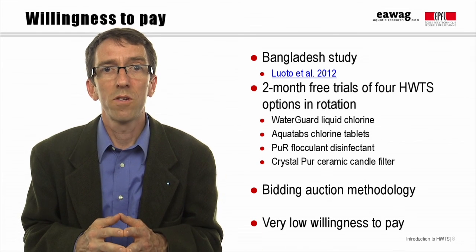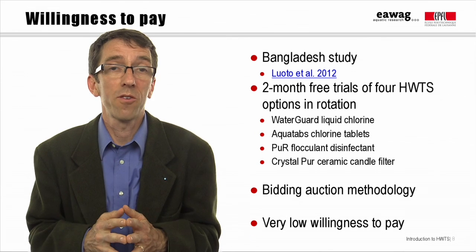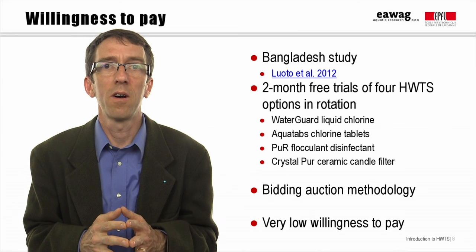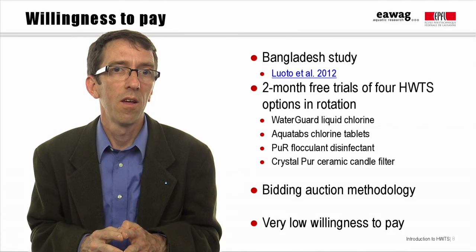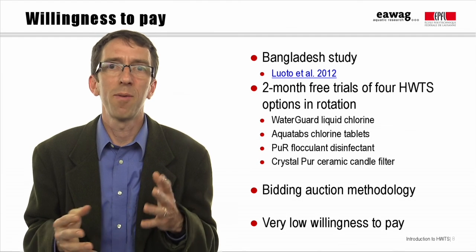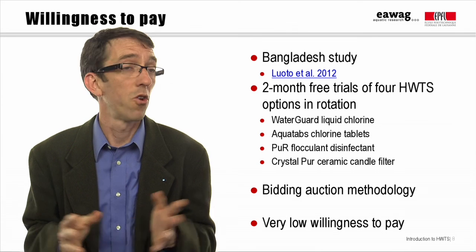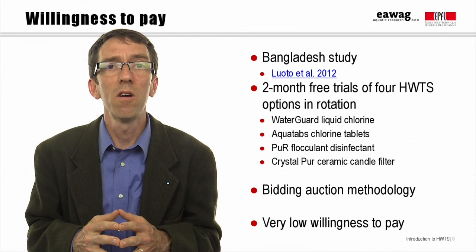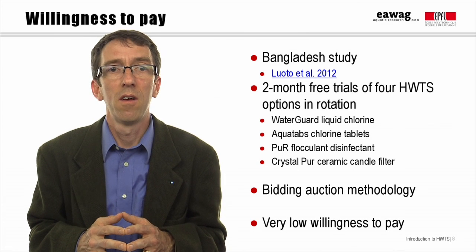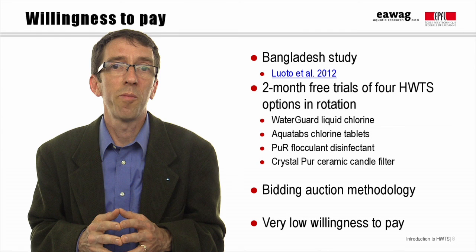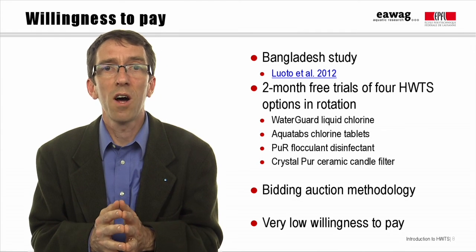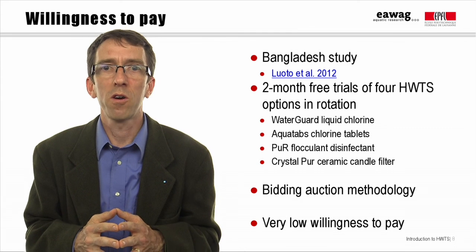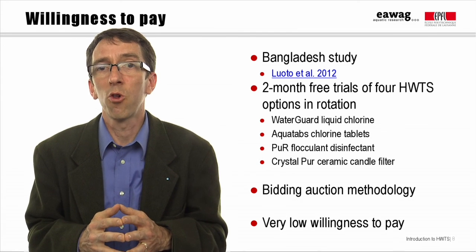The willingness to pay in this study was found to be extremely low. A large number of households said they wouldn't be willing to pay anything at all for these products. Nearly half of households were willing to pay something like a market rate for the Aqua Tabs, and about a third would pay a market rate for Water Guard. But only one percent of households were willing to pay the estimated market price of about $7.25 for the filter, and no one was willing to pay the market price for PUR. This low willingness to pay isn't simply due to lack of demand — less than a third of people considered their drinking water safe. One reason could be poverty in the study area of urban Dhaka slums, where per capita household incomes were well below $2 per capita per day purchasing power parity. Another reason could be lack of experience with paying for water or with the taste and odor of chlorine in Bangladesh.